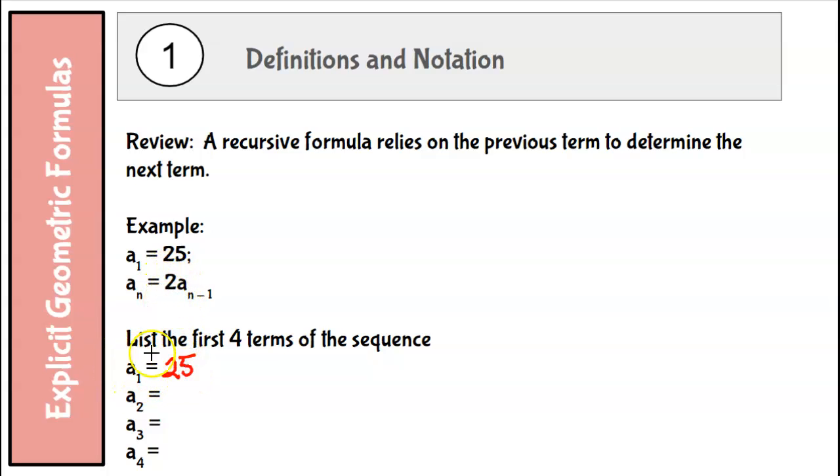And then I'm going to multiply each previous term by 2 to get the next term in the sequence. So this is recursive because I had to know that a sub 3 was 100 in order to get the next term in the sequence. It's not really very useful, especially if I want to find the 26th term. I have to do all the ones that came before.